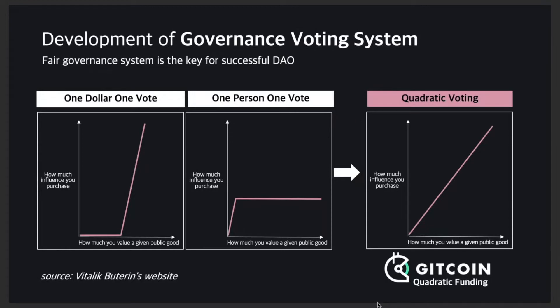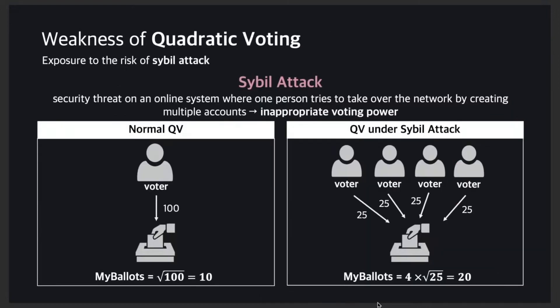To build a better DAO environment, many DAO participants try to develop a governance voting system in a fairer way. The quadratic voting method, which makes the cost of purchasing tickets increase exponentially, has emerged to compensate for the weakness of existing methods. However, this alternative is also exposed to the risk of sybil attack. By creating multiple accounts, voters with bad intentions can gain inappropriate voting power.